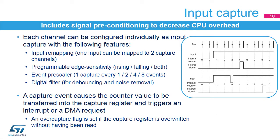This slide describes the input capture features. Each channel can be individually configured as input capture with a number of signal conditioning options. An input can be mapped on two capture channels, typically to differentiate rising edge from falling edge capture. The edge sensitivity is programmable and can be rising edge, falling edge, or both edges. An event prescaler allows capture of one event every two, four, or eight events, decreasing CPU burden when processing high-frequency signals and allowing more accurate measurements over multiple input signal periods. Spurious transition events due to noise or bounces can be removed using a programmable digital filter.